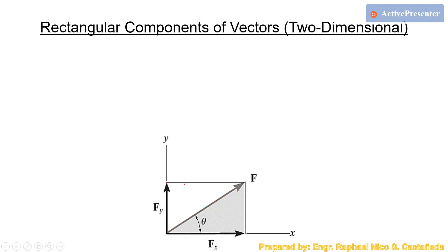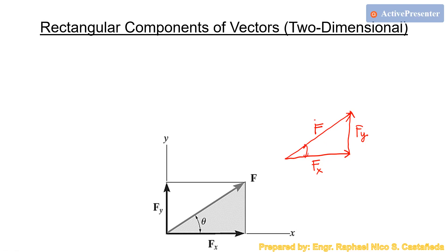Using the triangle law, you connect the components in a head-to-tail manner. Fx and Fy are connected head-to-tail, and the resultant F is drawn from the start to the end point. The triangle formed by the components and the resultant is a right triangle, so we don't need the sine or cosine law — we simply use trigonometry.